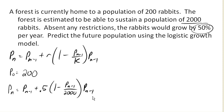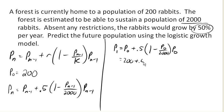Let's figure out what the population will be after one year. So after one year, we're going to have our previous population plus 0.5 times (1 - p_0/2000) times p_0. We already know p_0 is 200, so we'll substitute 200 here.